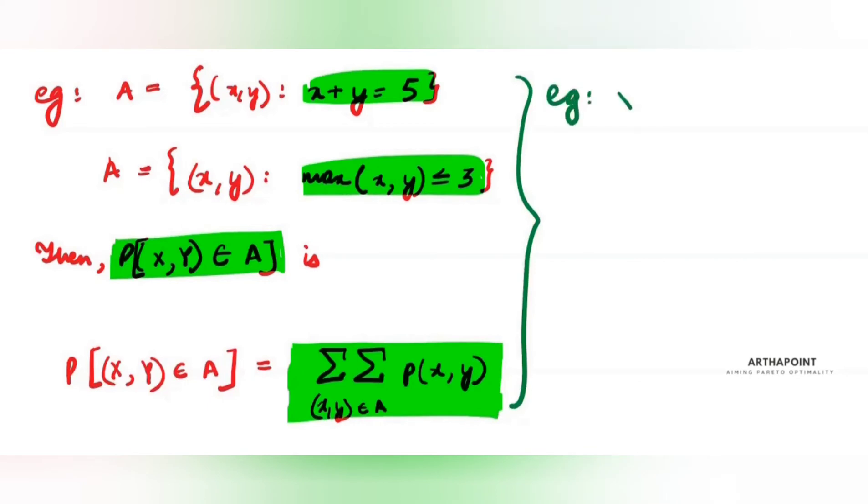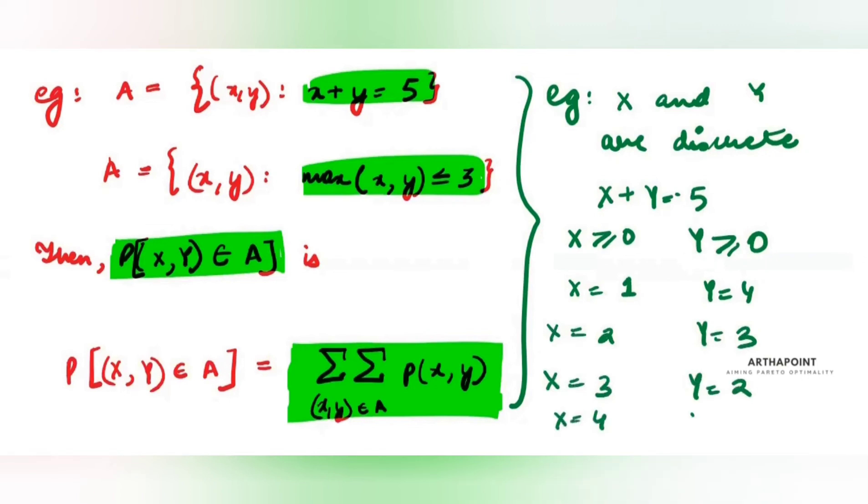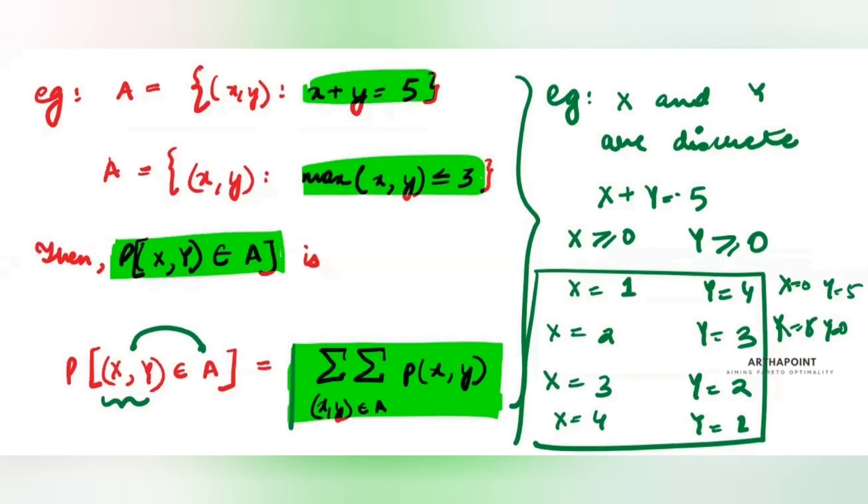Let me give you an example here. Supposedly, I tell you that X and Y are discrete. If I tell you that X plus Y is 5 and I tell you that X is greater than or equal to 0, Y greater than or equal to 0, then I'll have X=1, Y=4, X=2, Y=3, X=3, Y=2, X=4, Y=1. These are some of the possibilities that I have. And you can take X=0, Y=5, X=5, Y=0. What you're doing is you're saying, okay, what are the possibilities that X,Y belongs to A? And what is this A really? This A is all those X,Ys such that the sum is 5.